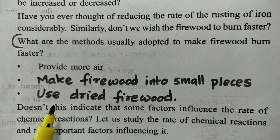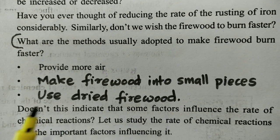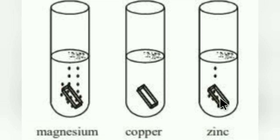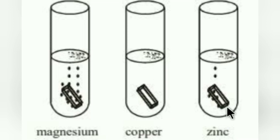Chemical reactions are affected by factors. To investigate these factors, we use 3 test tubes with dilute hydrochloric acid. We add the whole body of magnesium and copper. A small piece of magnesium is added. There are bubbles of hydrogen gas. Copper does not react at a high level. Dilute hydrochloric acid with copper shows no significant reaction.